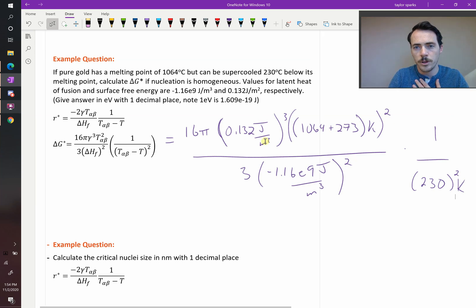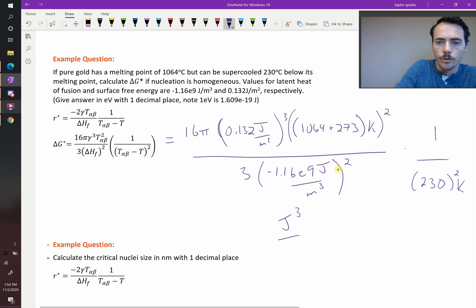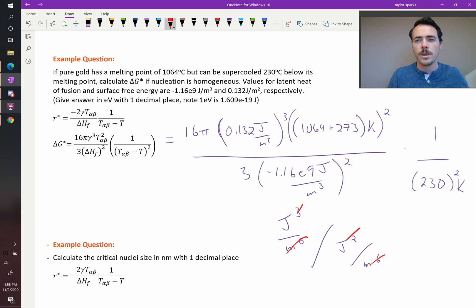Joules per meter squared cubed is going to be divided by joules per meter cubed squared. So that's going to be joules cubed over meters to the sixth divided by joules squared over meters to the sixth. So our meters to the sixth is going to cancel, and we're just going to be left with joules. So if we plug things in, you're just going to get a value in joules.